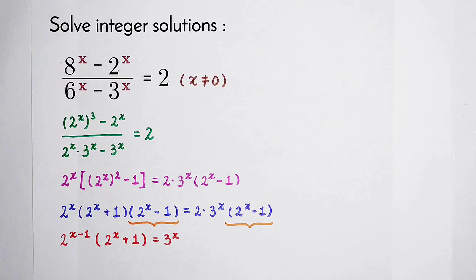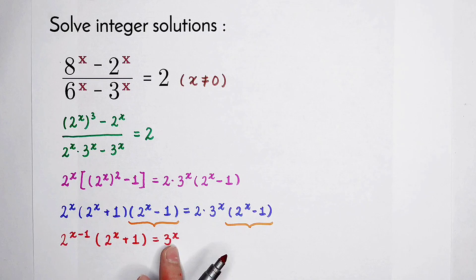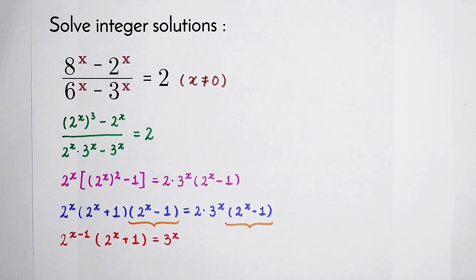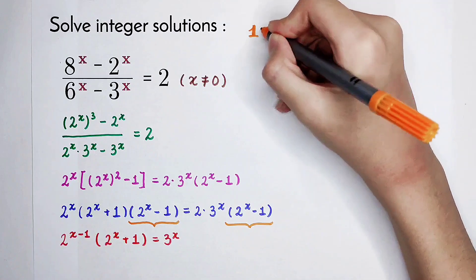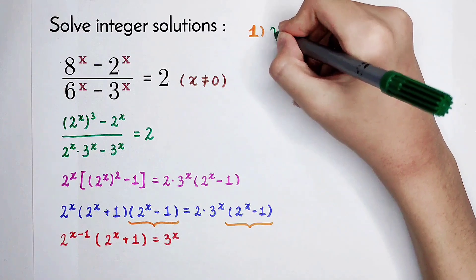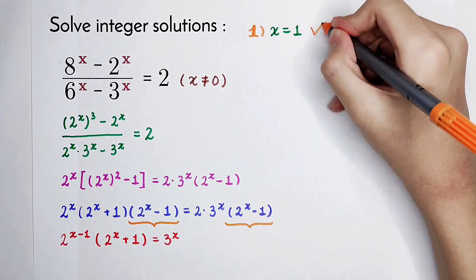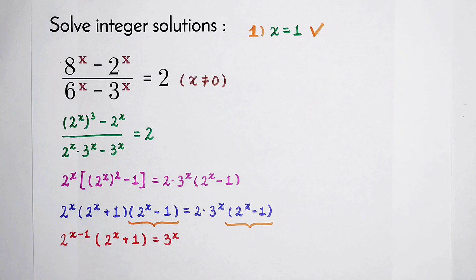This expression looks not so nice. But maybe you have found that when x equals 1, you can get: 1 times 3 equals 3, and the equation holds. Let's verify: x equals 1 gives 8 minus 2 equals 6, and 6 divided by 3 equals 2. It is correct.